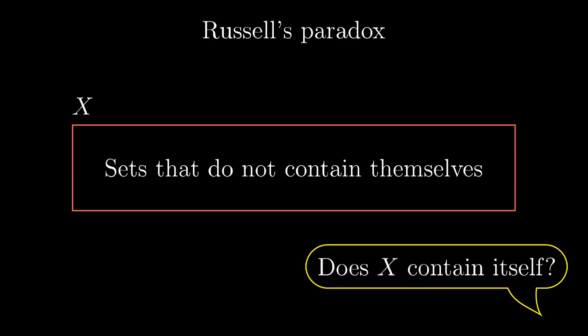We ask whether this set contains itself. We obtain a contradiction. If X doesn't contain itself, we have to put it into X, after all it is not containing itself. But if we put it into X, it suddenly contains itself.